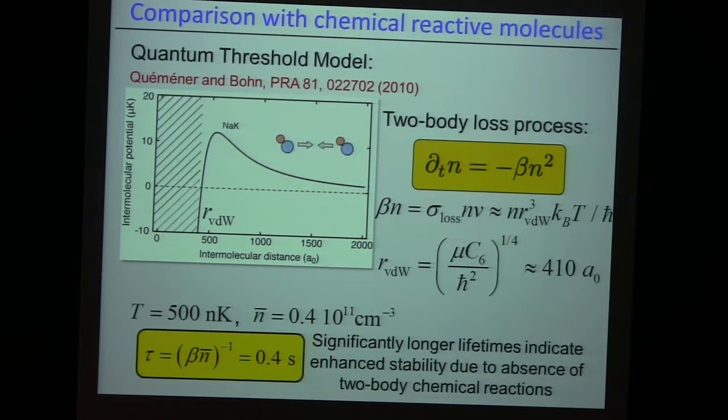The Van der Waals range — around 400 Bohr radii — also roughly tells you where the P-wave barrier is. It's far out there — much further than for atoms, which is 40 Bohr radii. So it seems that they have an even harder time entering the complicated region inside the barrier than atoms do.